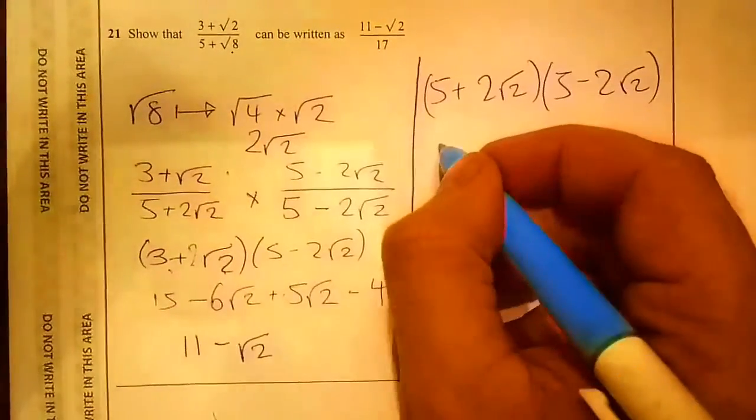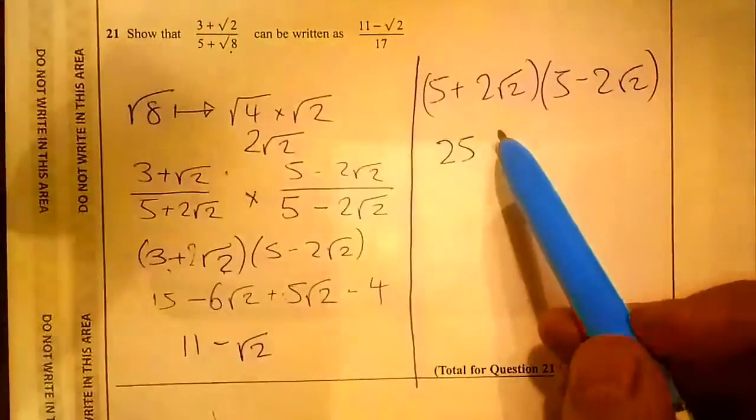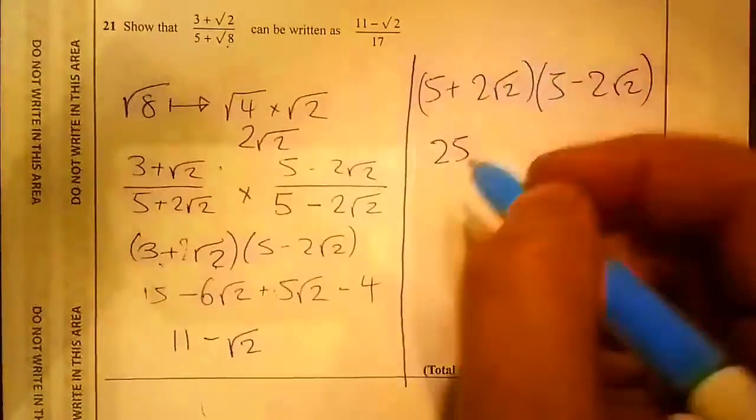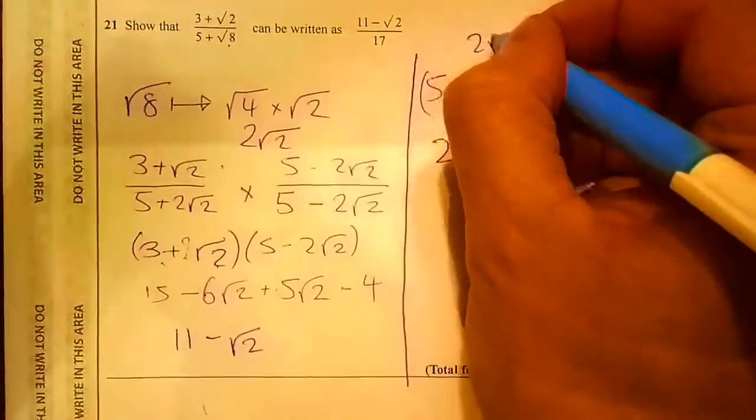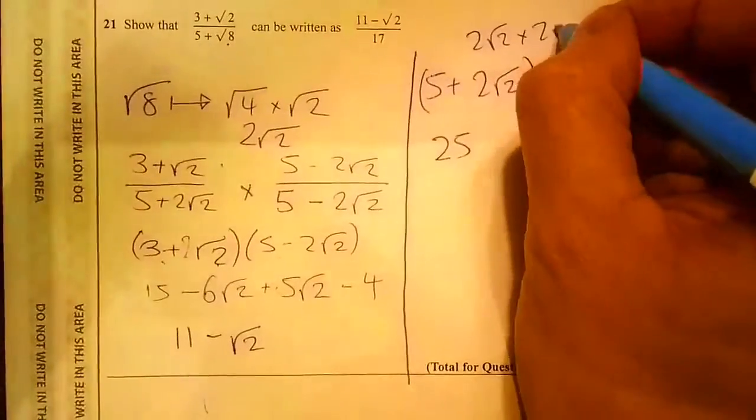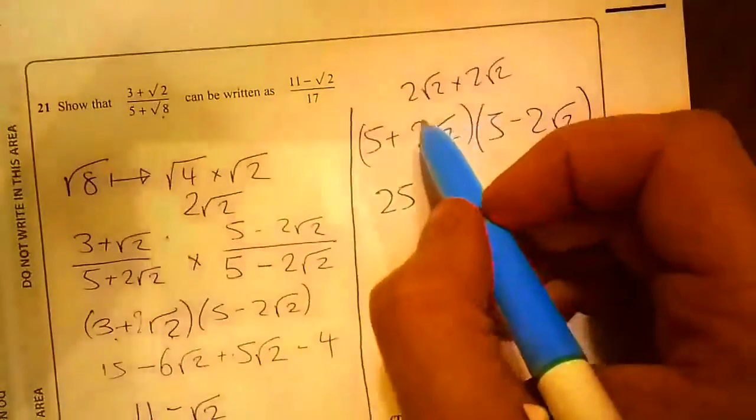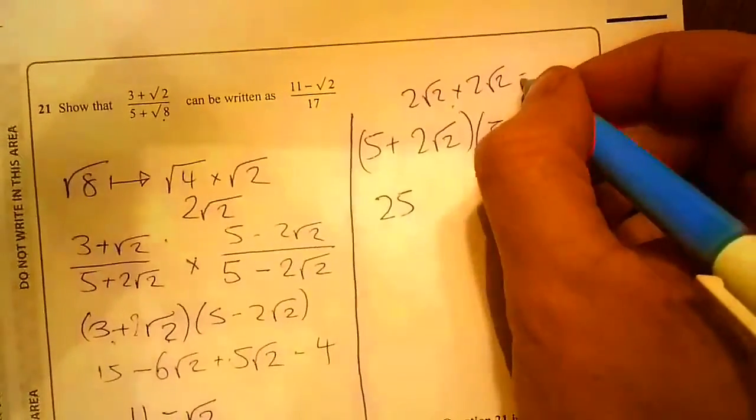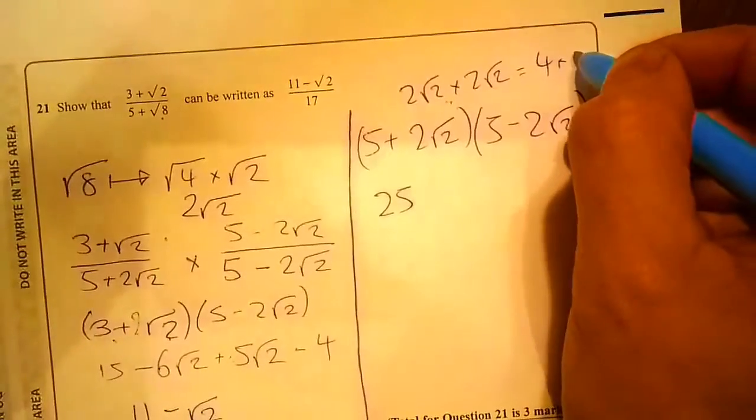5 squared is 25. Now this might be confusing, so let me write it out: 2√2 × 2√2. 2 × 2 is 4, and √2 × √2 is 2.